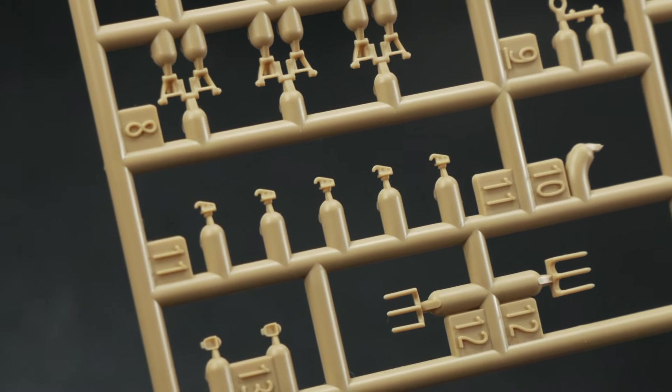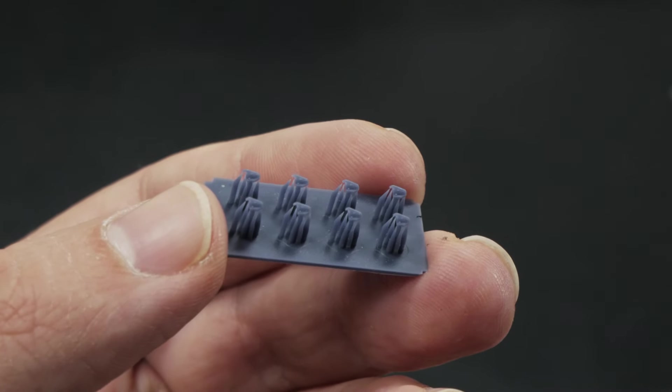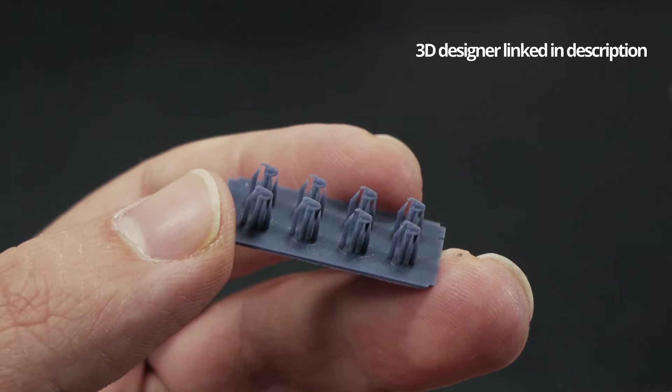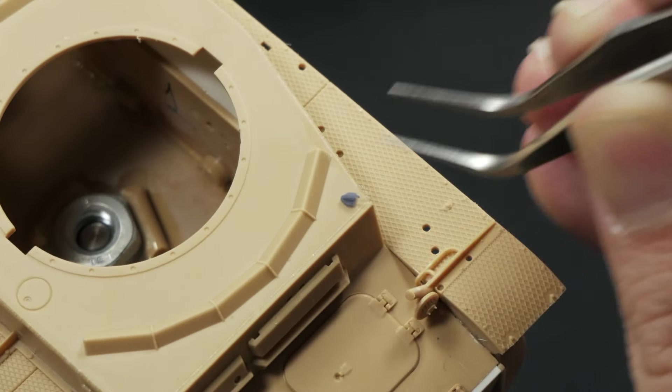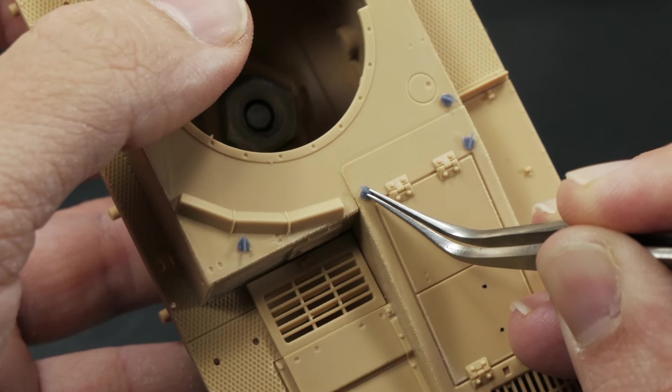In the beginning of the video, I mentioned that thanks to the group build, I could get super limited aftermarket pieces. And here they are. I could use some 3D printed parts specifically designed for this model.